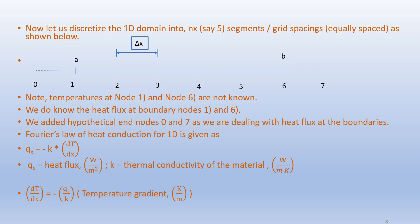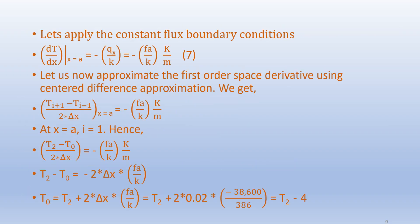According to Fourier's law of heat conduction for one dimension: q_x = −K·(dT/dx), where q_x is the heat flux in watts per meter square and K is the thermal conductivity. Rearranging, we get dT/dx = −q_x/K. Here dT/dx is called the thermal gradient and is given in Kelvin per meter. Let us apply the constant heat flux boundary conditions at node A: dT/dx at x = A equals −q_x/K = −F_A/K.